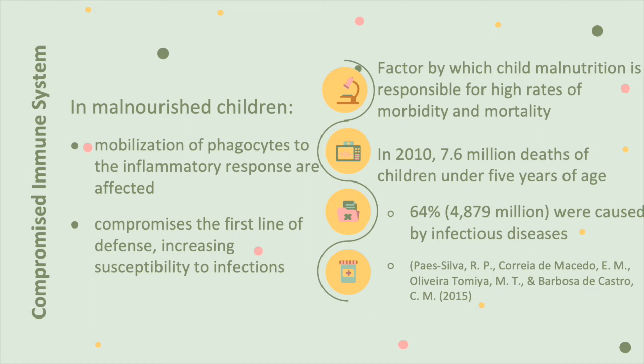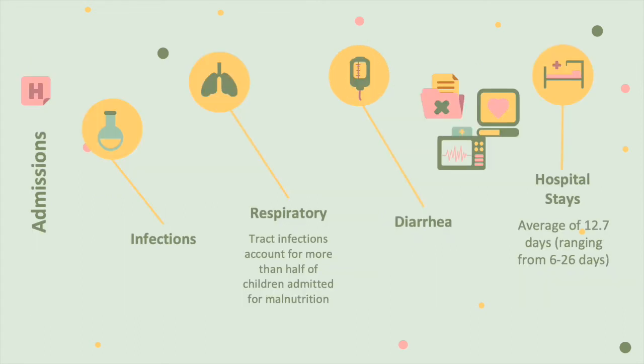That is a significant number of children who died due to infection, again from that compromised, weakened immune system. With hospital admissions, respiratory tract infections account for more than half of those children admitted with malnutrition. Diarrhea is also prevalent, and hospital stays average 12.7 days, with a minimum of six days and a maximum of 26 days for treating malnutrition.